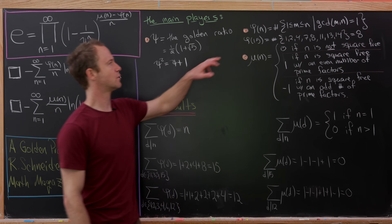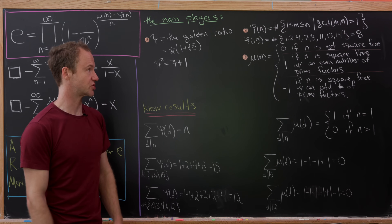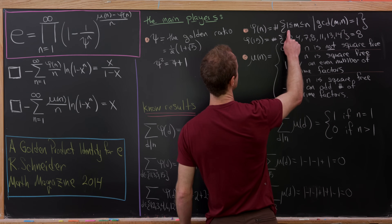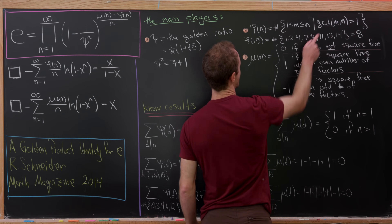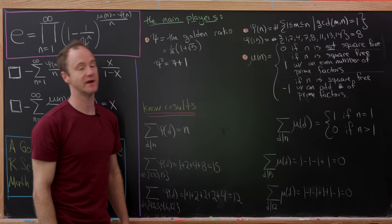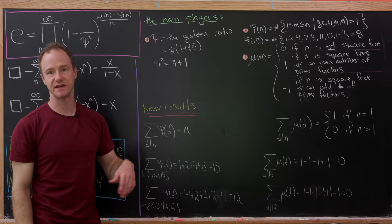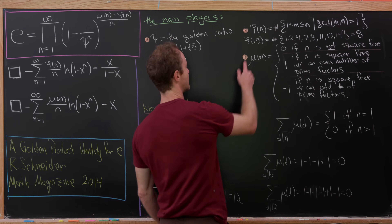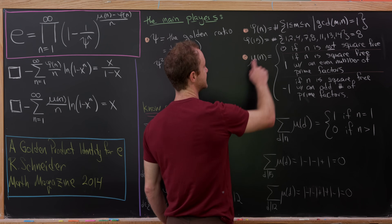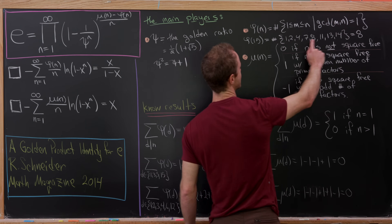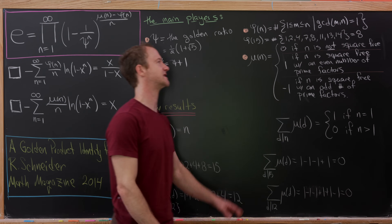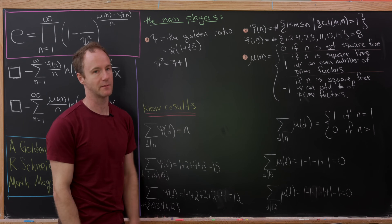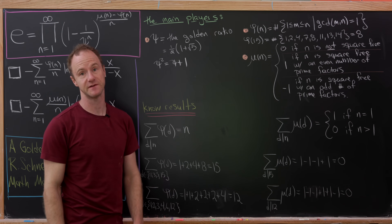Next we'll look at Euler's totient function. Remember that counts the numbers between 1 and n that are relatively prime to n — in other words their GCD with n is 1. For example, phi of 15 is the number of elements in the set of integers relatively prime to 15, which equals 8.